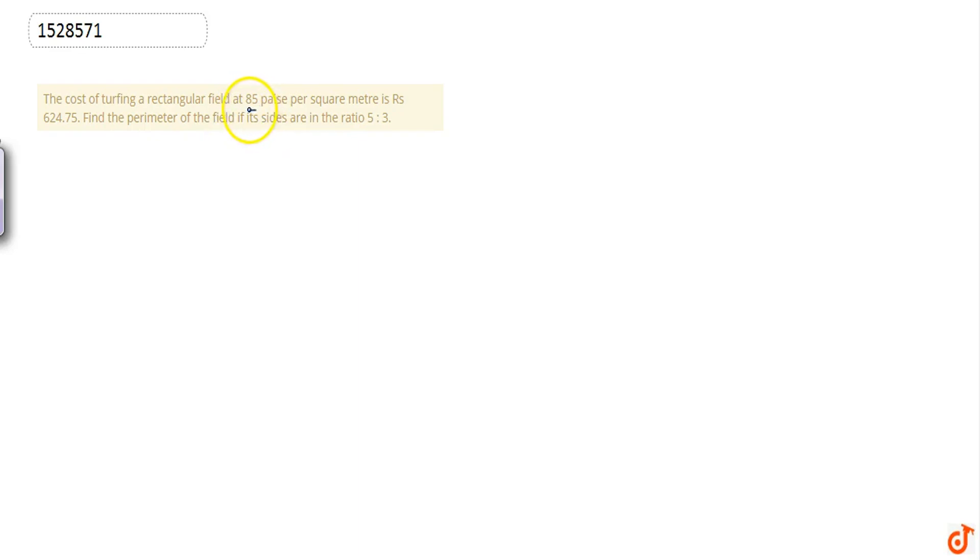We will find out the cost given and the total cost given, and we will compare them after finding x's value. Then we will find out the perimeter value. First of all, let the sides be 5x and 3x. Now, area is 5x into 3x, that is 15x square.